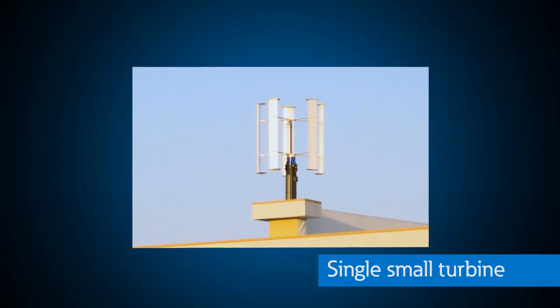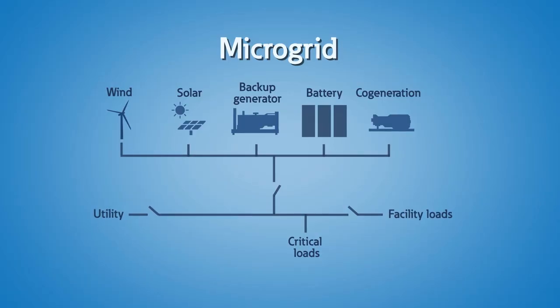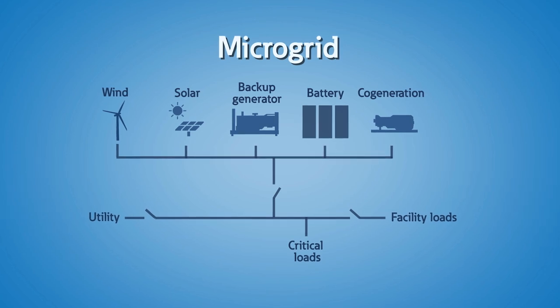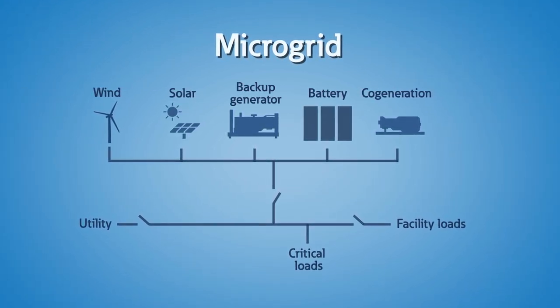Single small turbines are typically used for residential, agricultural, and small commercial and industrial applications. Small turbines can be used in hybrid energy systems with other distributed energy resources in microgrids, powered by sources such as generators, energy storage, and solar. These systems are called hybrid wind systems and are typically used in remote off-grid locations and are becoming more common in grid-connected applications for resiliency.